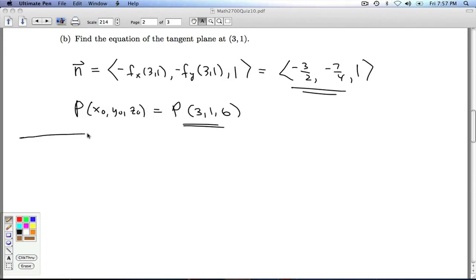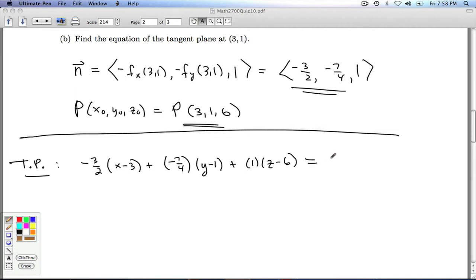So here we go for the tangent plane. I take the x component times x minus the x-coordinate of the point on the plane. So that's a negative 3 halves times x minus 3. Plus the y component times y minus the y-coordinate on the plane, negative 7 fourths times y minus 1. Plus the z component times z minus the z-coordinate. And the all-important equals zero.